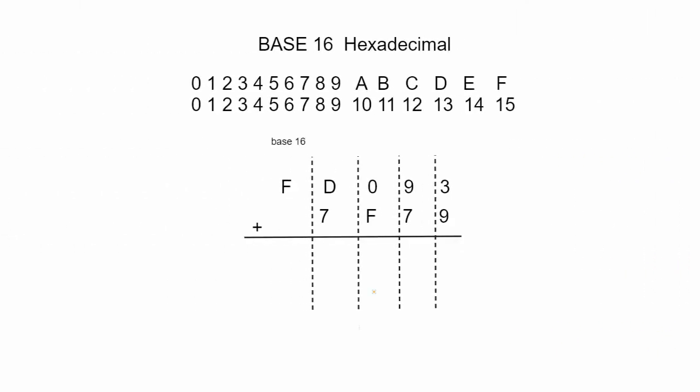Here is our final problem. So we begin with this column and a 3 and a 9. 3 is 3. 9 is 9. So that is a 12. But a 12 is a C. So this column value is C.